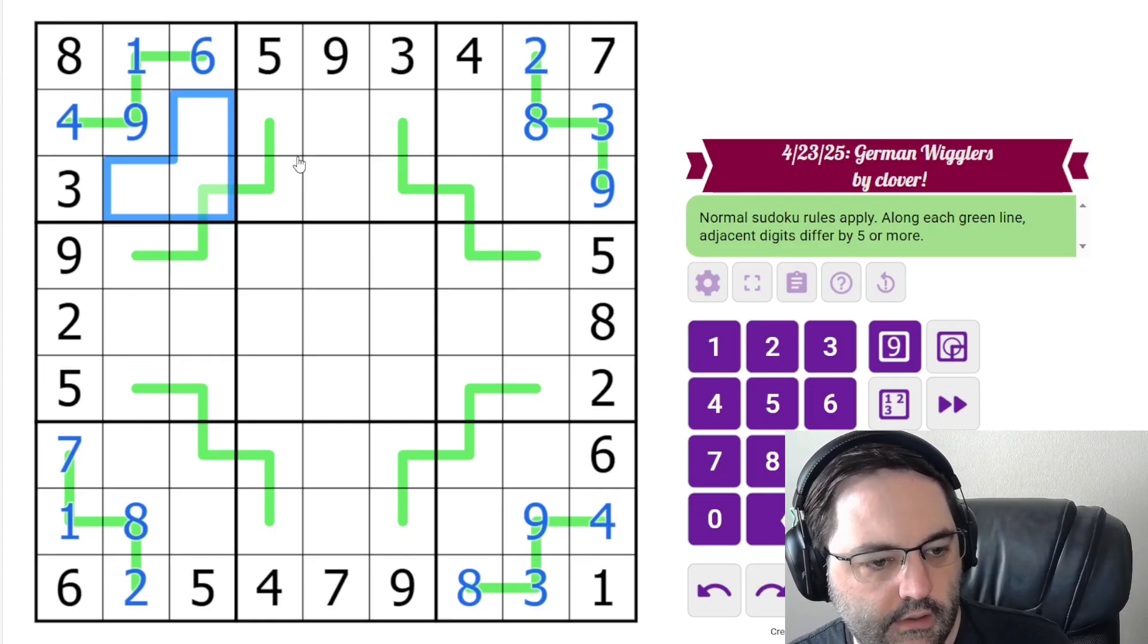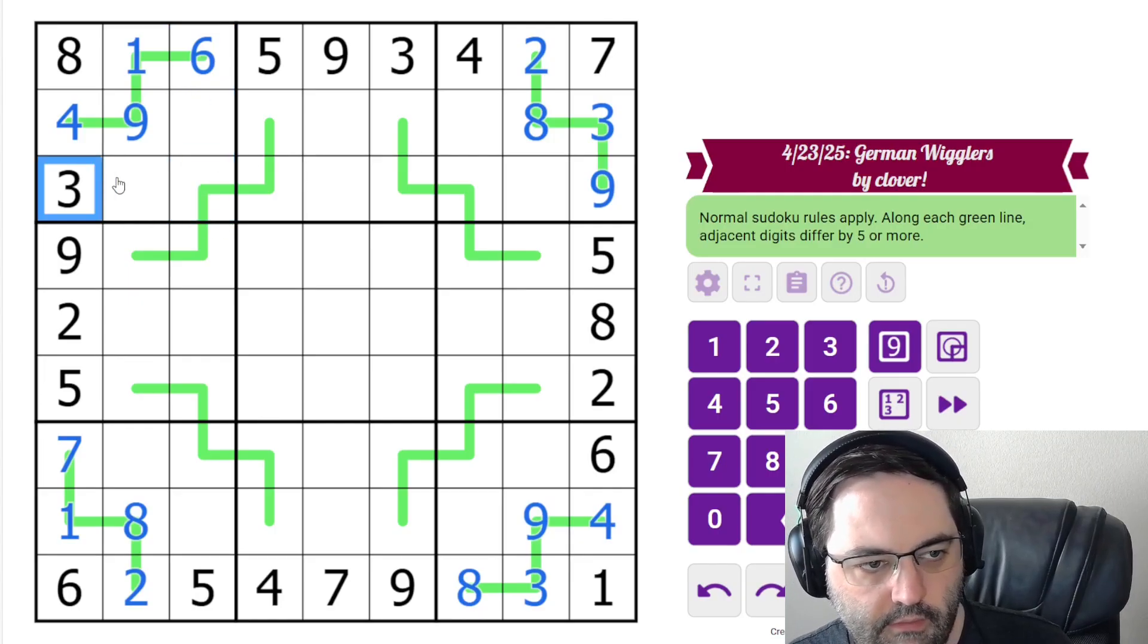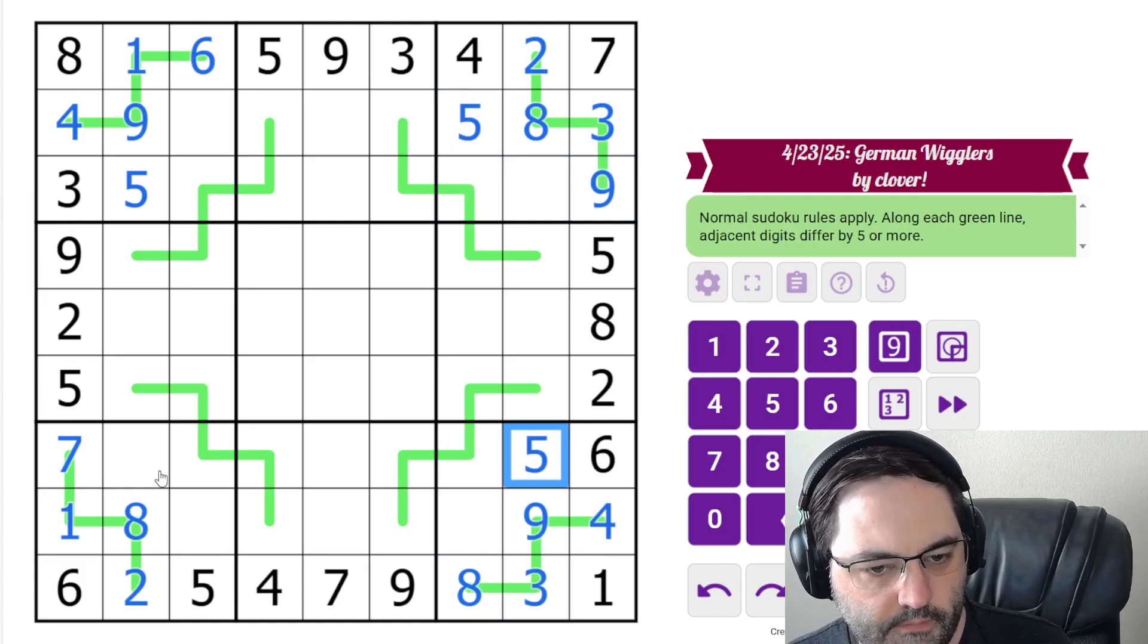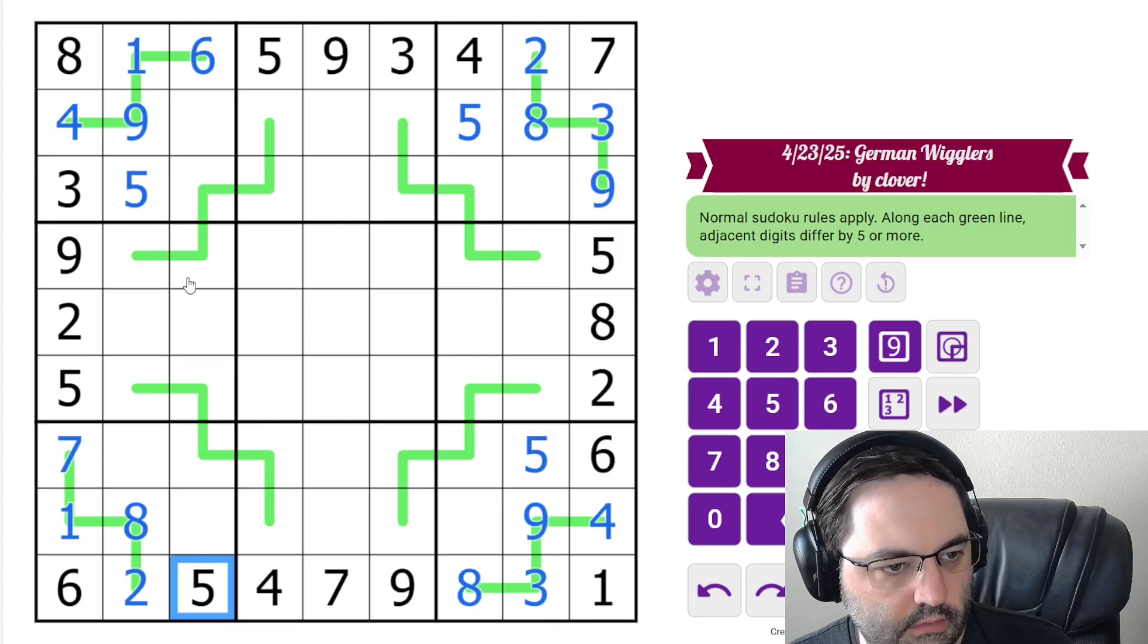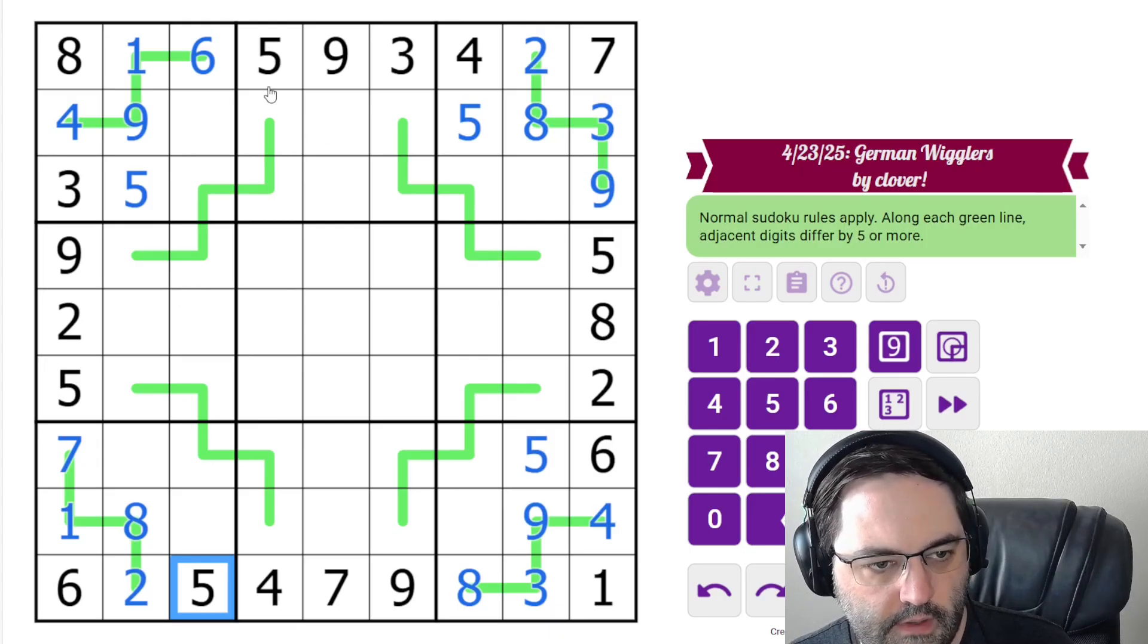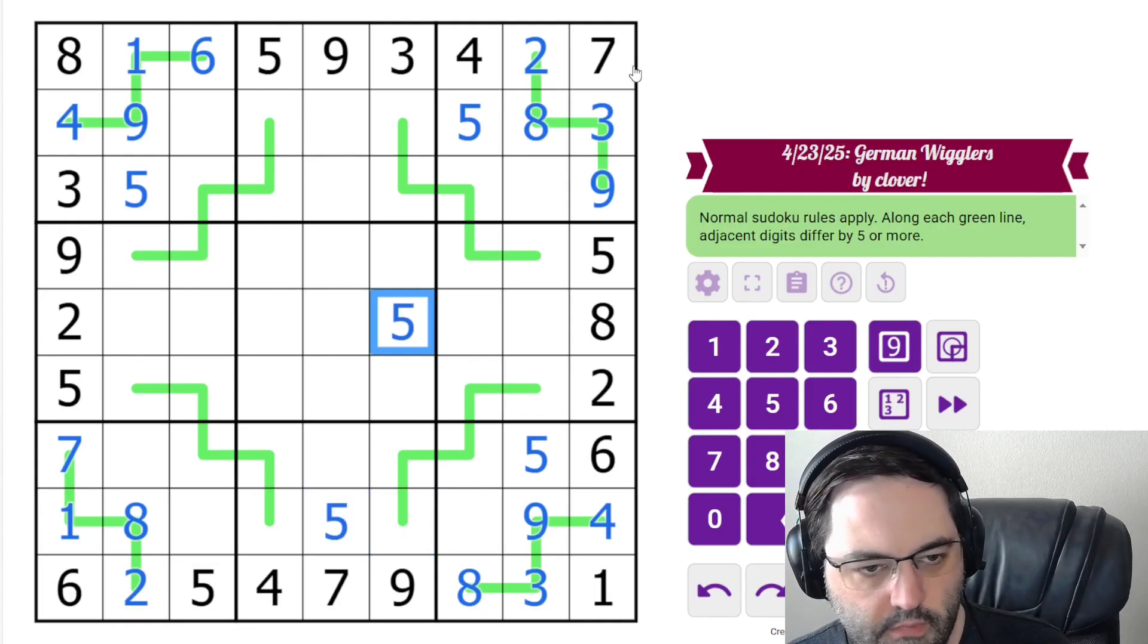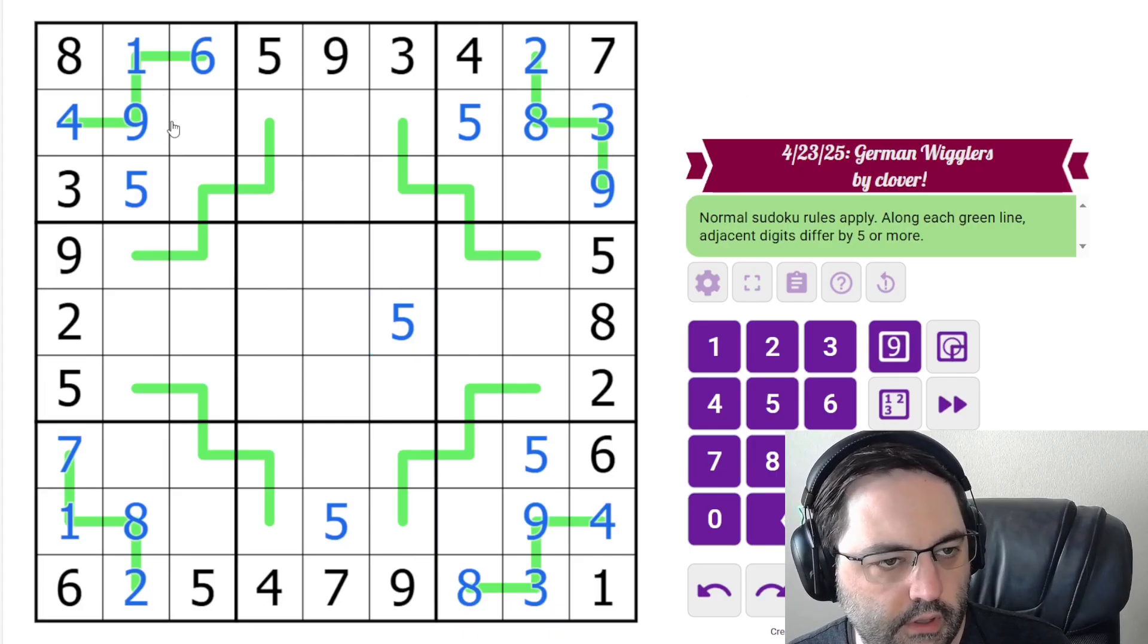Let's look at these. We need a 5 in the box, so it's going to have to go here, and that's going to feed around the grid. Placing some 5s. We already have the 5 here. We have 2 left, and it can't go in the line, so they go like that. So those are done.